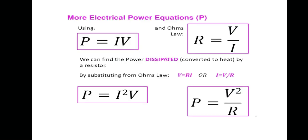We write the equation for power dissipation as P equals IV. By Ohm's law, V equals IR and I equals V over R. Substituting these, we can also write P equals I squared R, and P equals V squared over R.